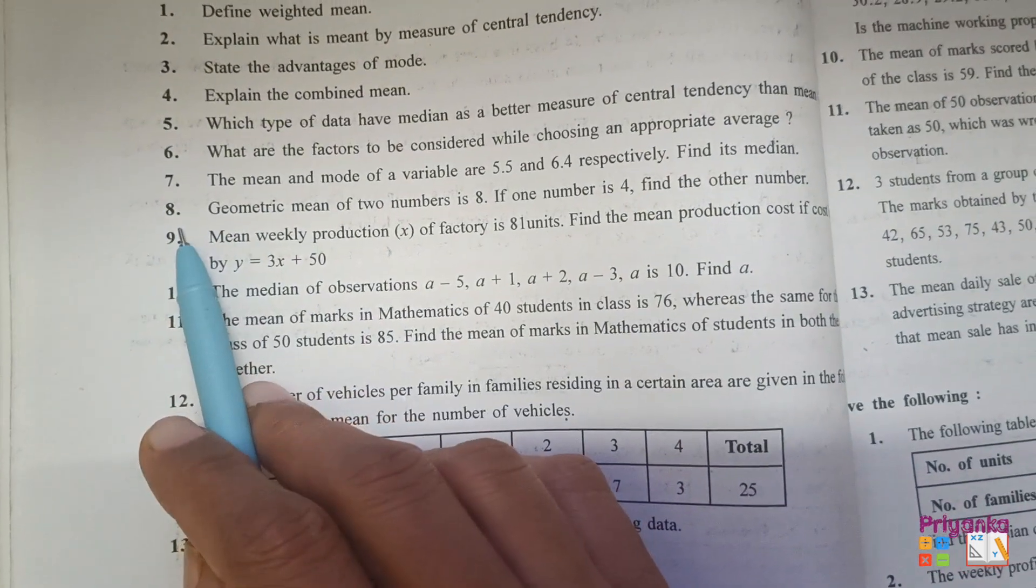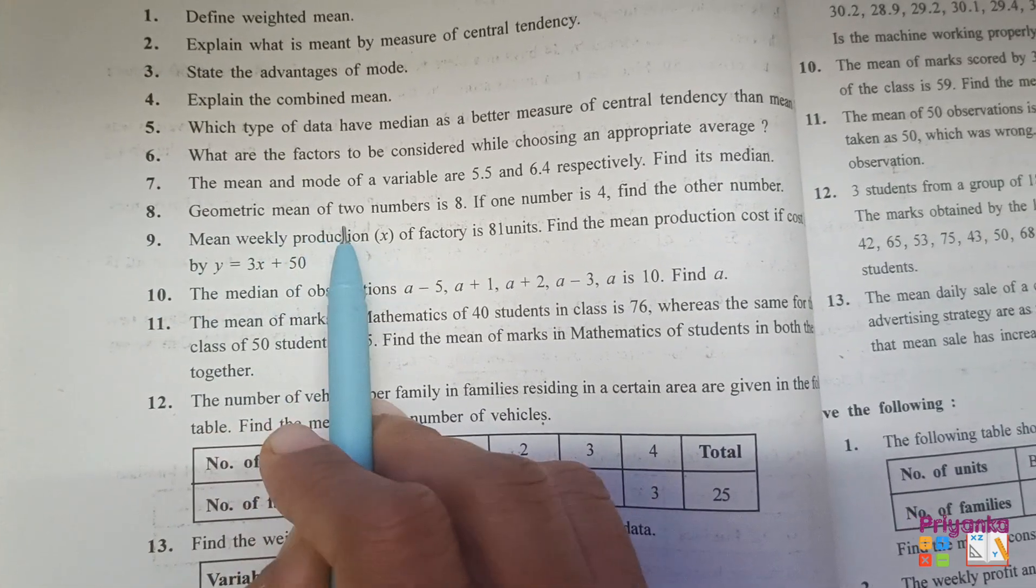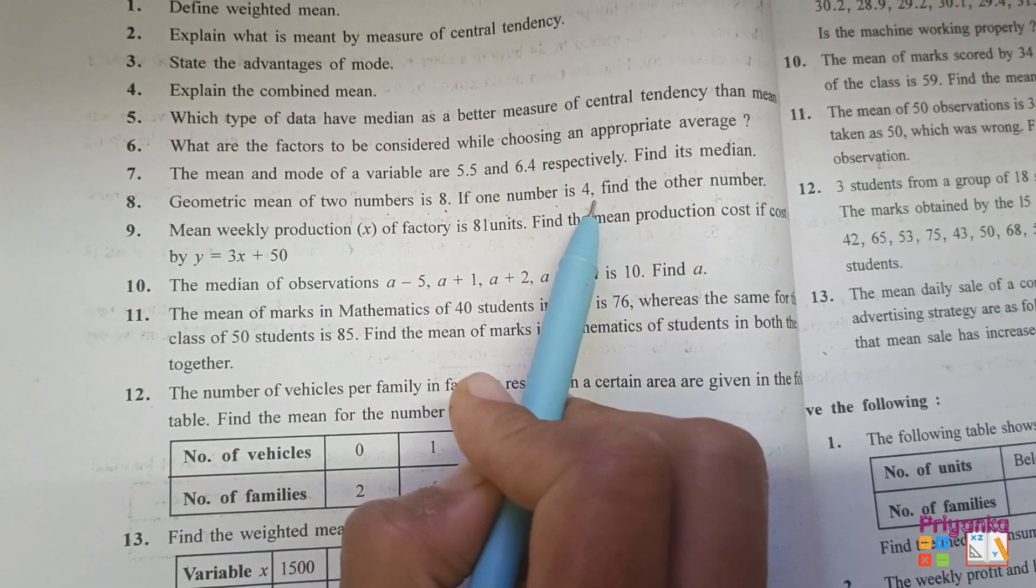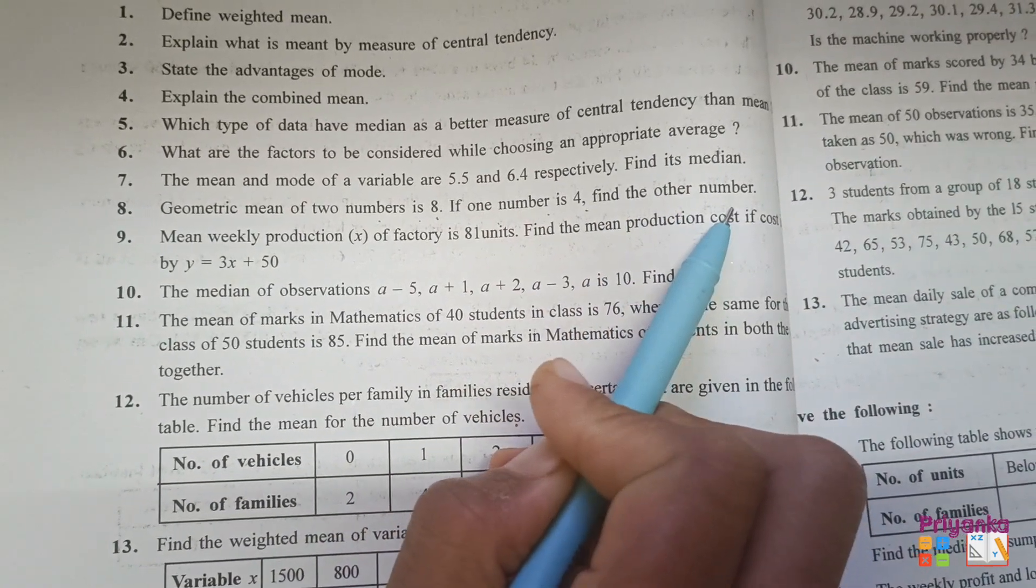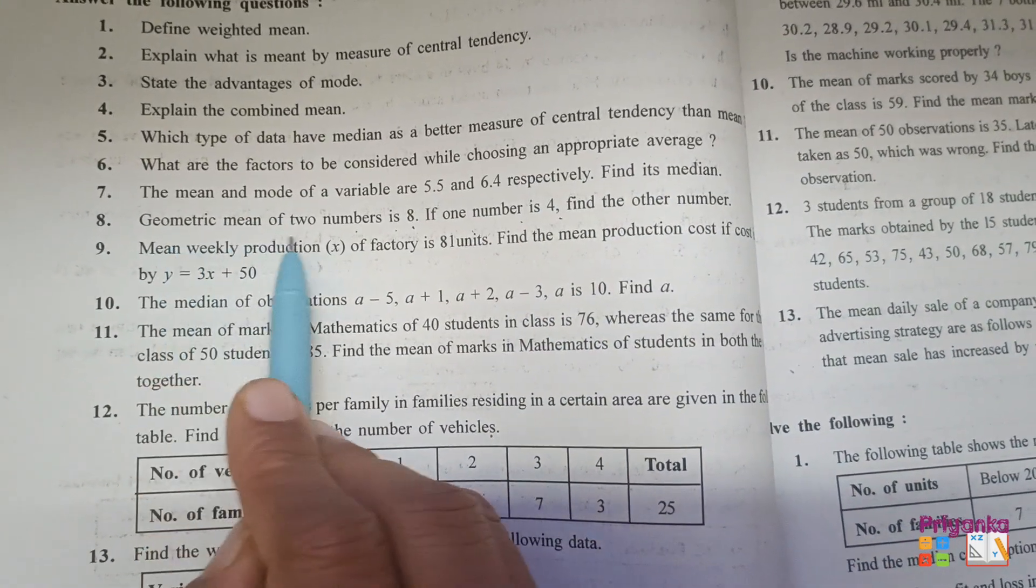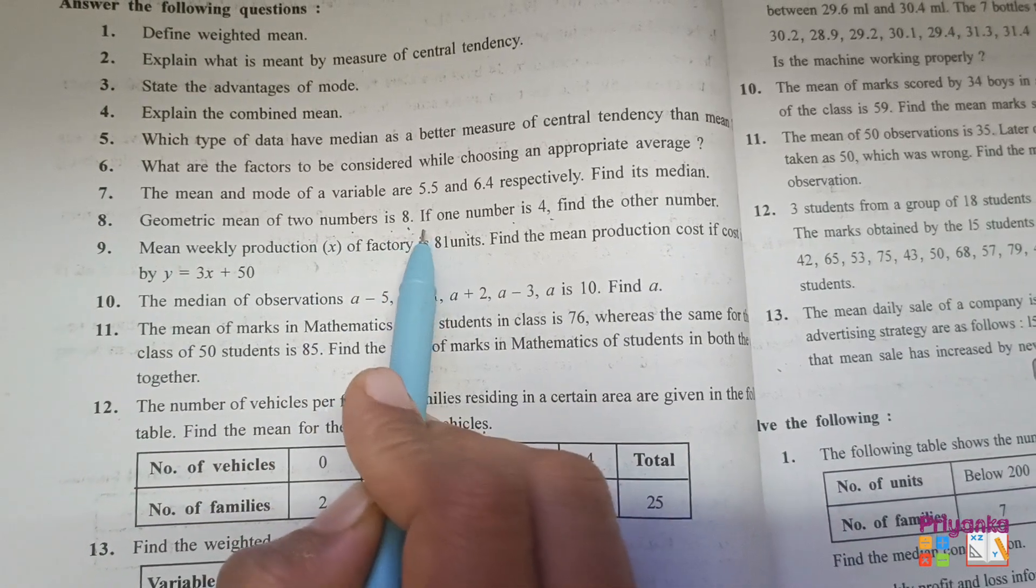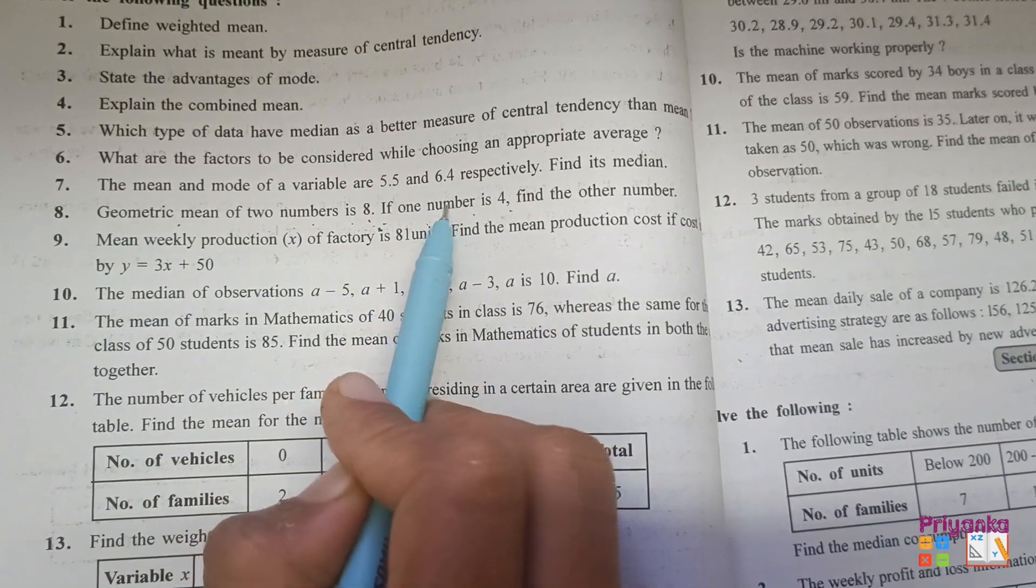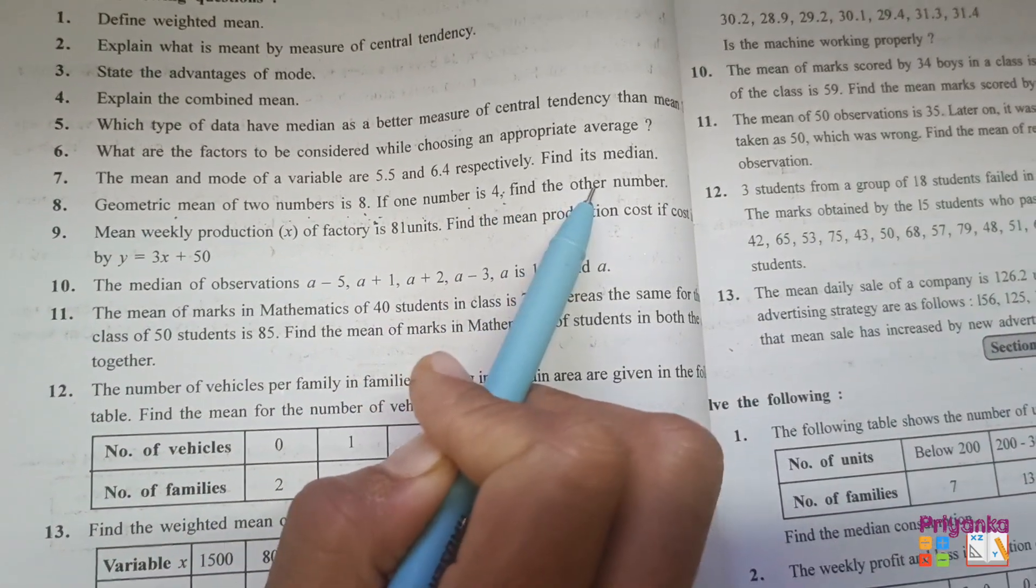Question number 8. Geometric mean of 2 numbers is 8. If one number is 4, find the other number. Here geometric mean of 2 numbers is 8. Out of 2 numbers, one number is 4. Here we have to find out the other number.